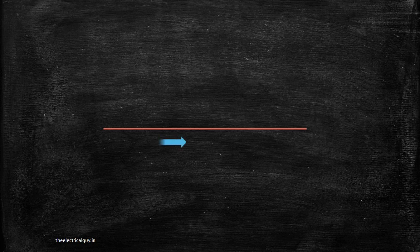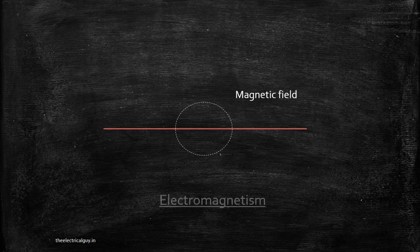So let's get started. Whenever current passes through a conductor, it creates some field around it, and that field is called a magnetic field. This effect of creating the field is called electromagnetism, and inductors are the devices which are developed to take advantage of this phenomenon — electromagnetism.